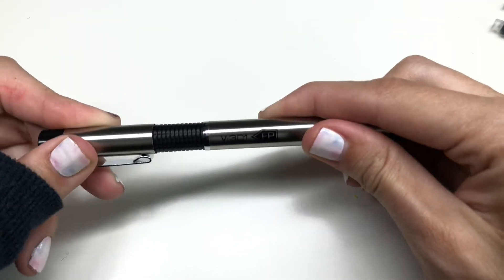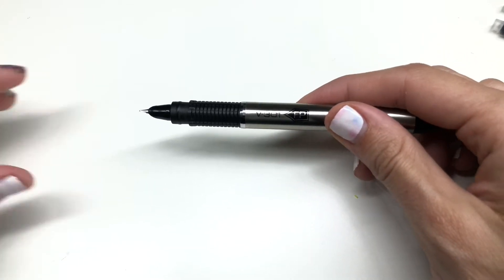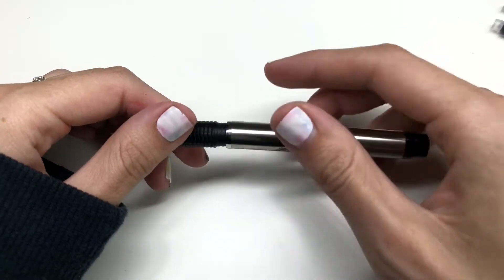To get started, twist off the top of the pen. If you already have an ink cartridge in place, make sure you remove it.